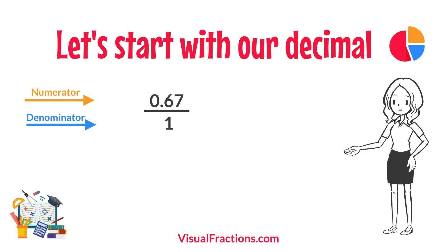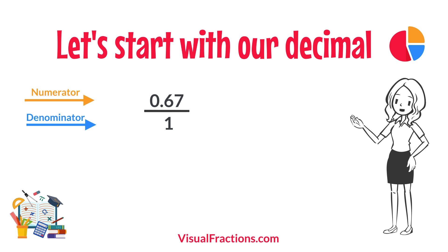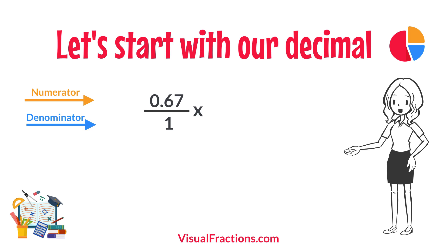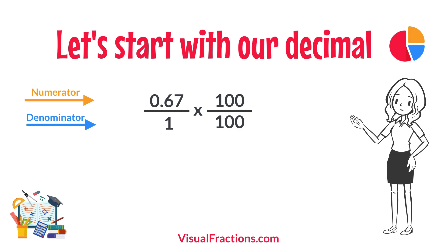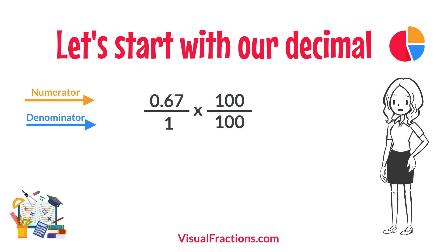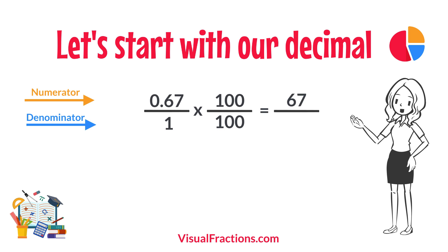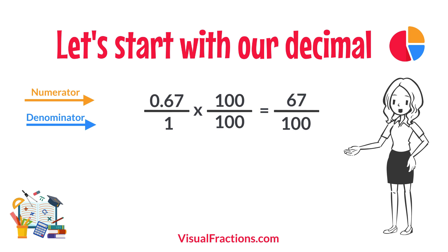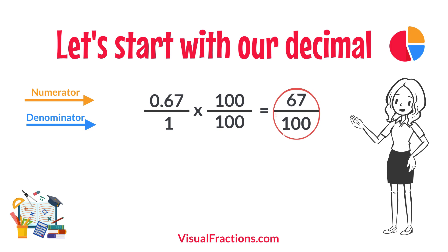This sets up the conversion process where we multiply both the numerator, the decimal, and the denominator, 1, by 100 because there are two decimal places. So, 0.67 times 100 gives us 67, and 1 times 100 gives us 100. This translates 0.67 to the fraction 67 over 100.